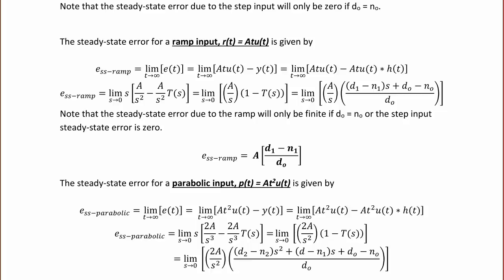this would be the limit as s approaches 0 of s times A/s^2 - A/s^2 T(s), and using algebra to simplify that, that's the limit as s approaches 0 of A/s times the quantity (d1 - n1)s + d0 - n0 over d0.